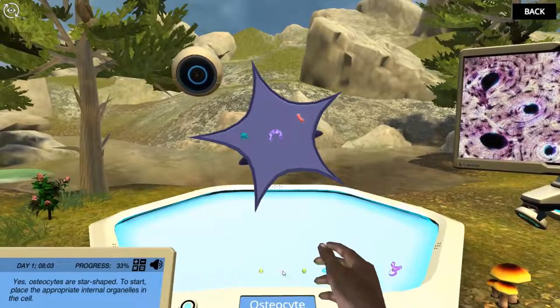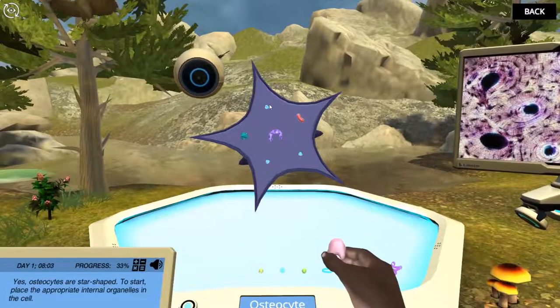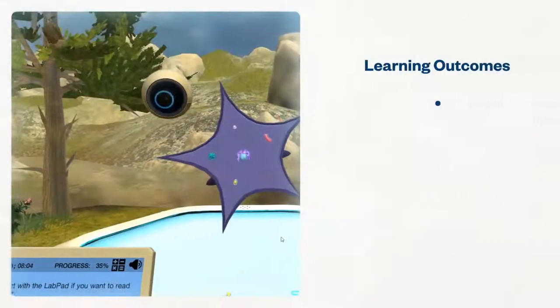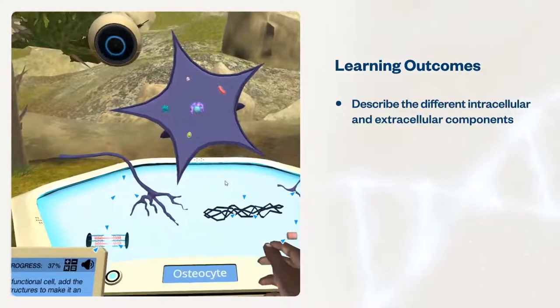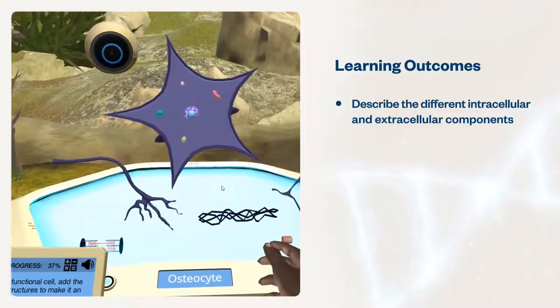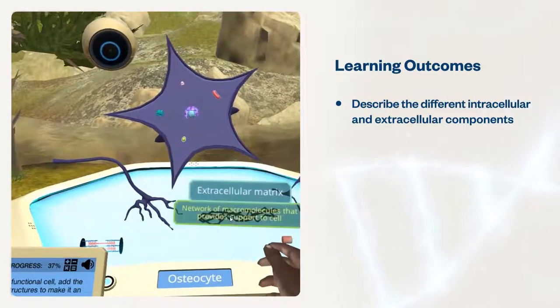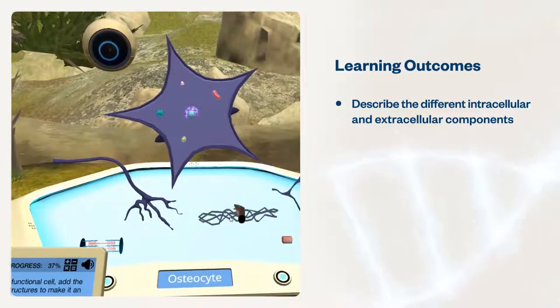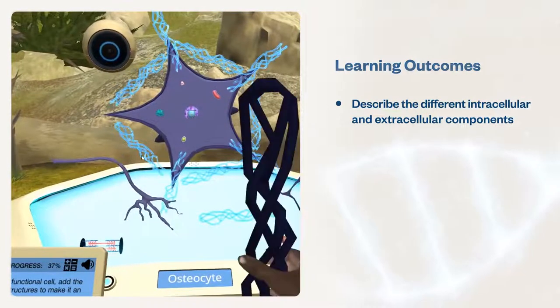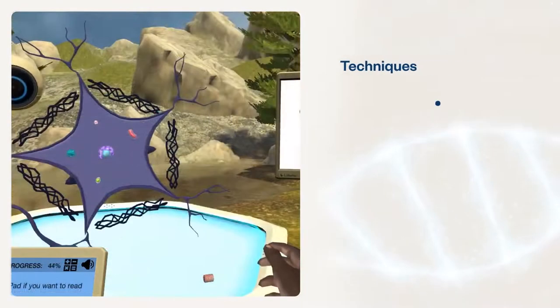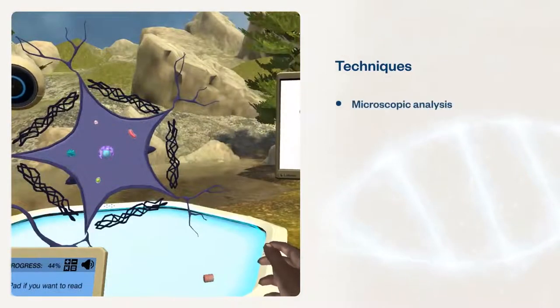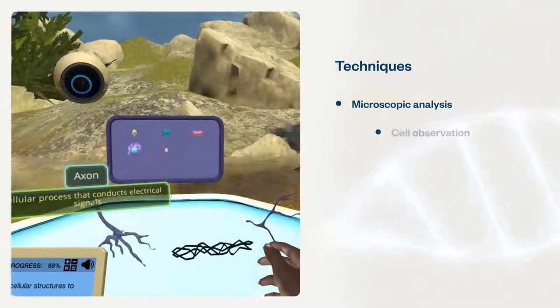These simulations will help students describe the different intracellular and extracellular components forming eukaryotic cells. Students will use techniques such as microscopic analysis and cell observation.